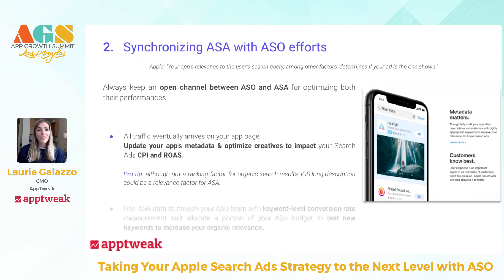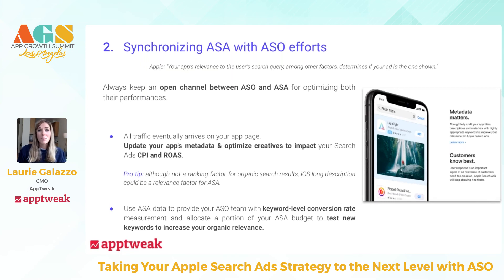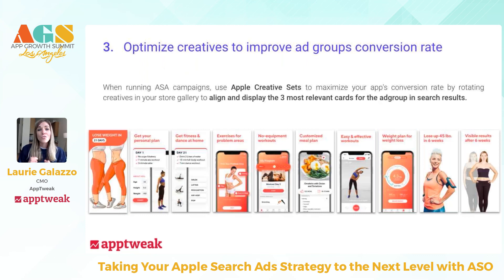You can also use ASA data to optimize your ASO campaigns — this is really a win-win where both teams benefit from working together. Using ASA metrics you can optimize your organic campaigns by targeting keywords for your store listings that you know convert well based on what you've gathered on the ASA side. You can also use ASA to test new keywords for your organic efforts.